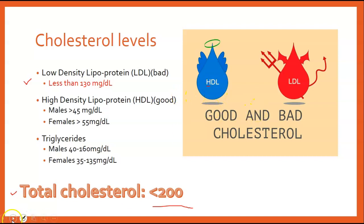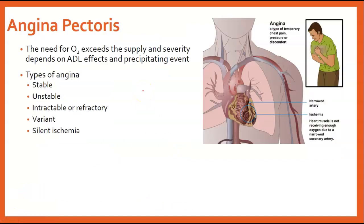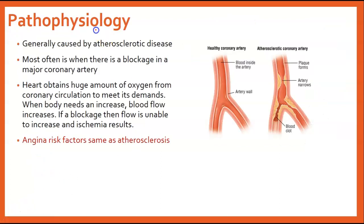One of the big signs of atherosclerosis and coronary artery disease is angina pectoris. There are different types: basically the pain results when the heart's need for oxygen exceeds the supply. Types include stable, unstable, intractable, refractory, variant, and silent ischemia.